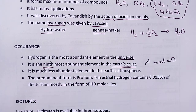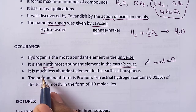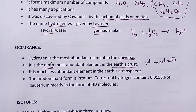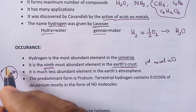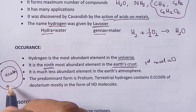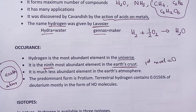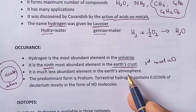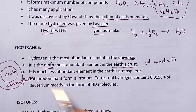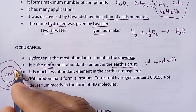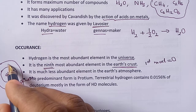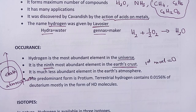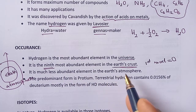Hydrogen is the ninth most abundant element in the earth's crust, but it is much less abundant in the earth's atmosphere. The reason is that hydrogen is the lightest gas, so it won't stay near the earth's surface — gravity cannot hold it, and it goes far away from the earth's surface because it has very little weight.